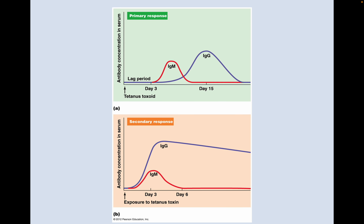Looking at this graph: on the x-axis we have time measured in days, and on the y-axis is antibody concentration in blood serum. This is the primary response — the first time a tetanus toxoid vaccine is introduced. There's a lag period of three days before the body begins to produce immunoglobulin M, and then 15 days until immunoglobulin G peaks. So there's a long period where, if you were exposed to the pathogen instead of the vaccine, you'd be sick for quite a while before your body mounted enough of an immune response.